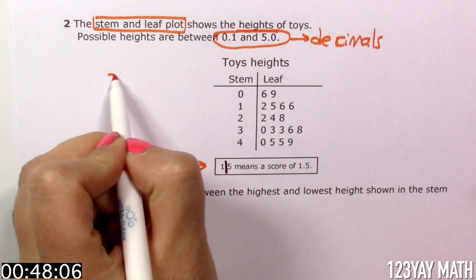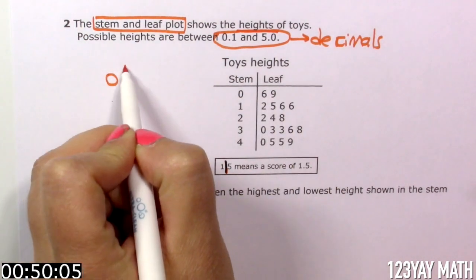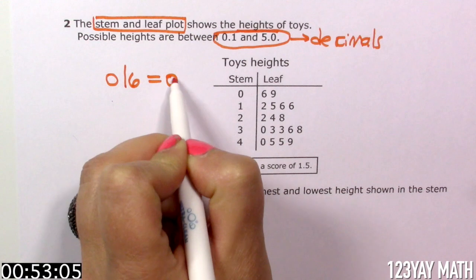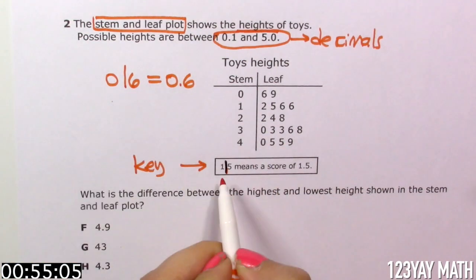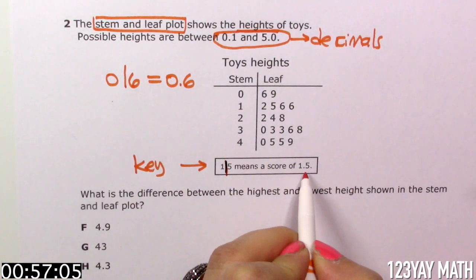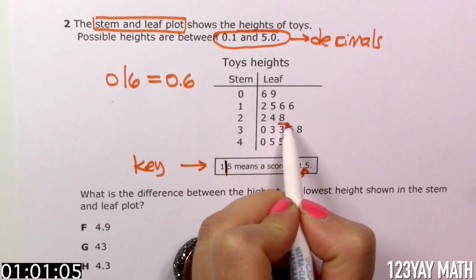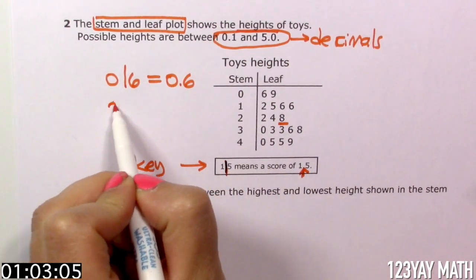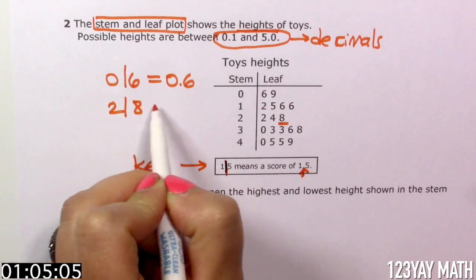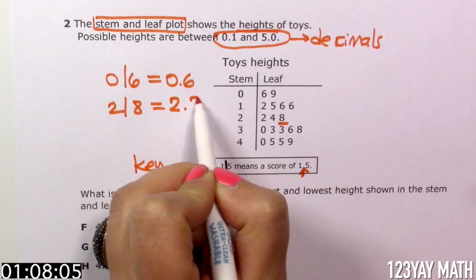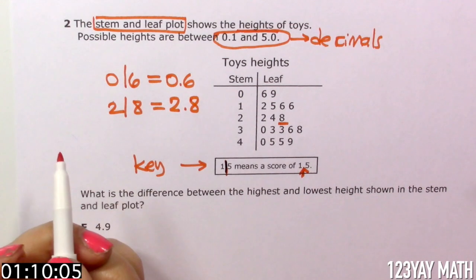0 line 6 equals 0.6 because this line is substituted by a decimal point. Let's do this one. We see the stem 2 and leaf 8. This is equal to 2.8. As simple as that.